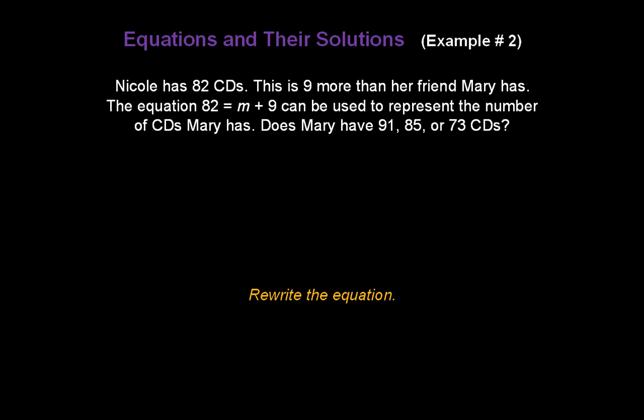Well, let's start by rewriting the equation. 82 equals m plus 9. Replace m with 91 first. Does 82 equal 91 plus 9? Solve the right-hand side to find out.